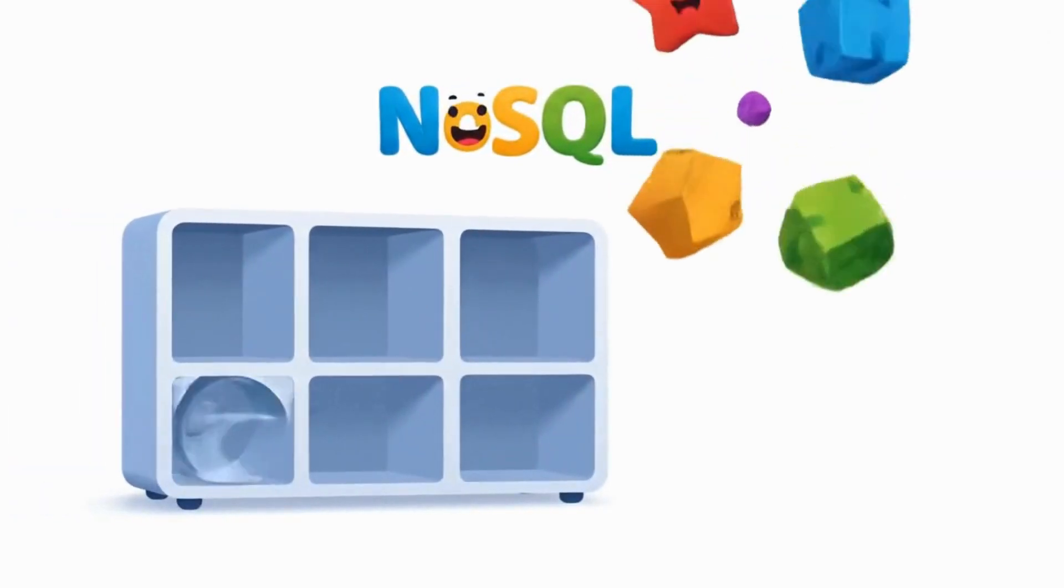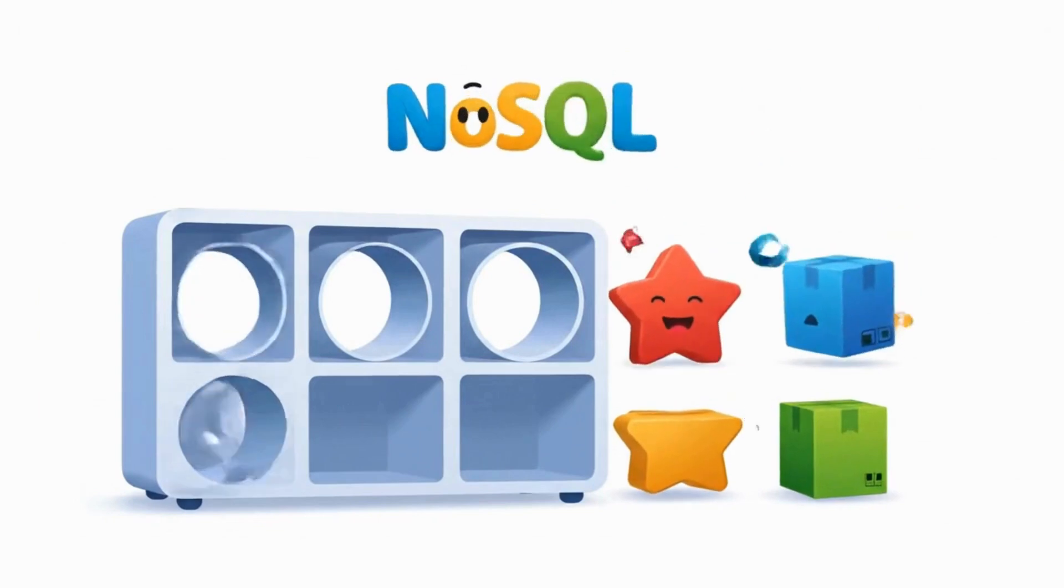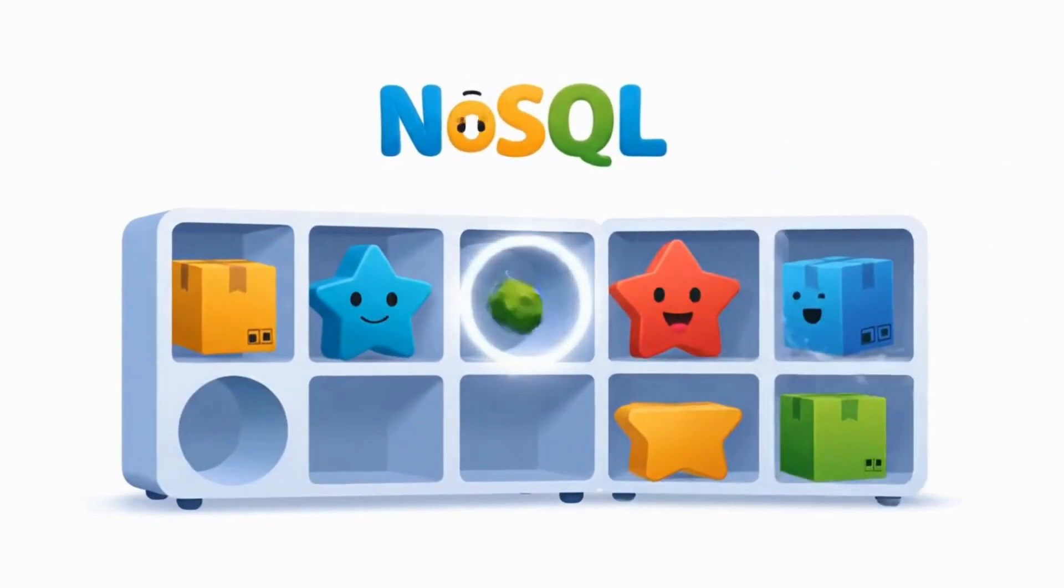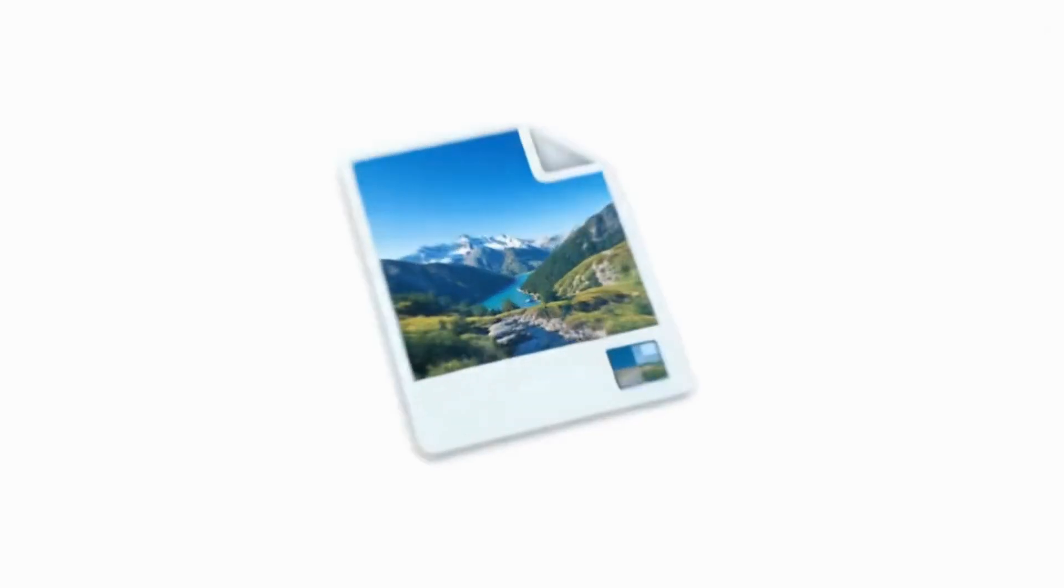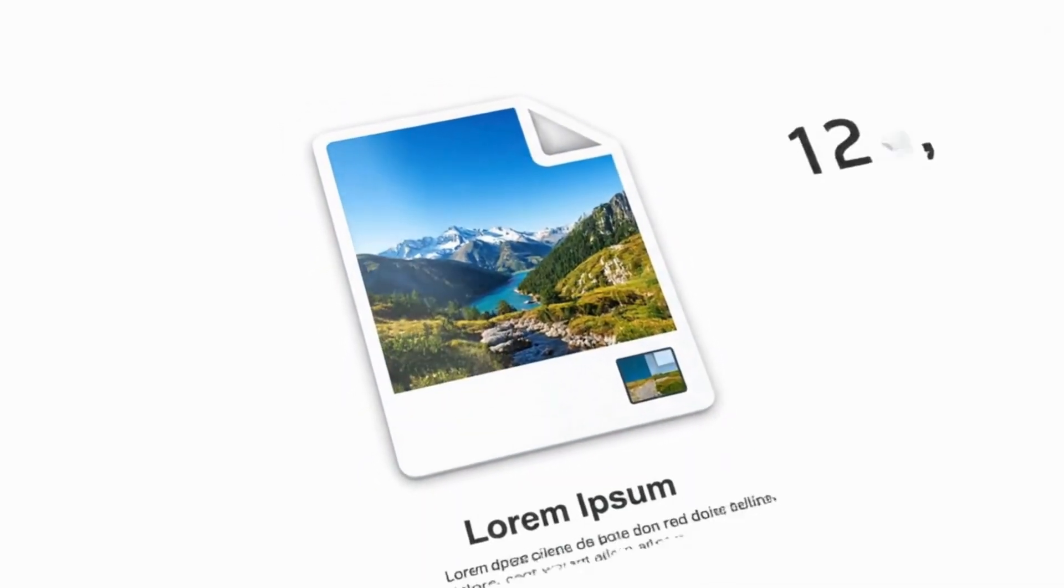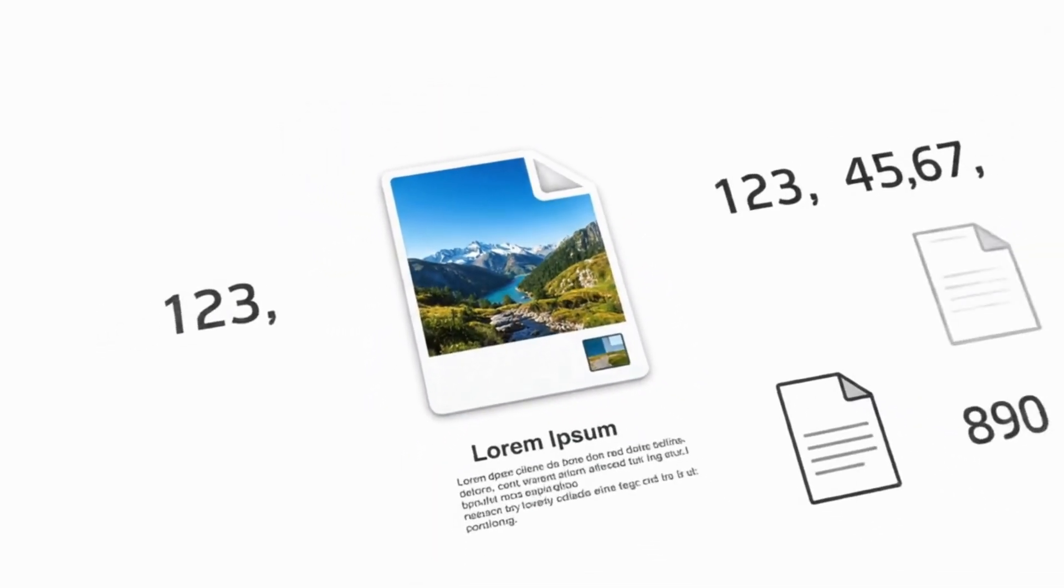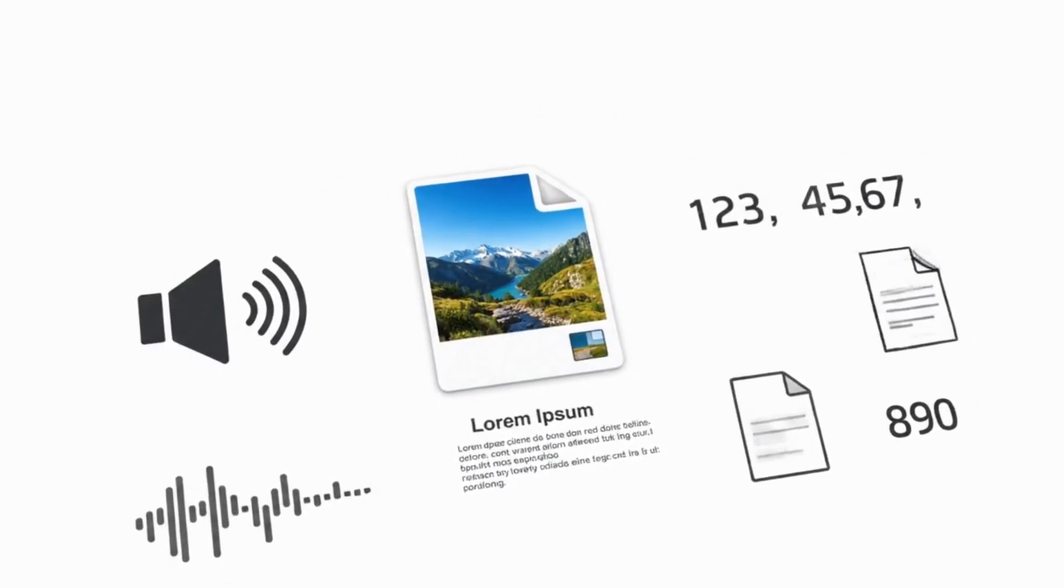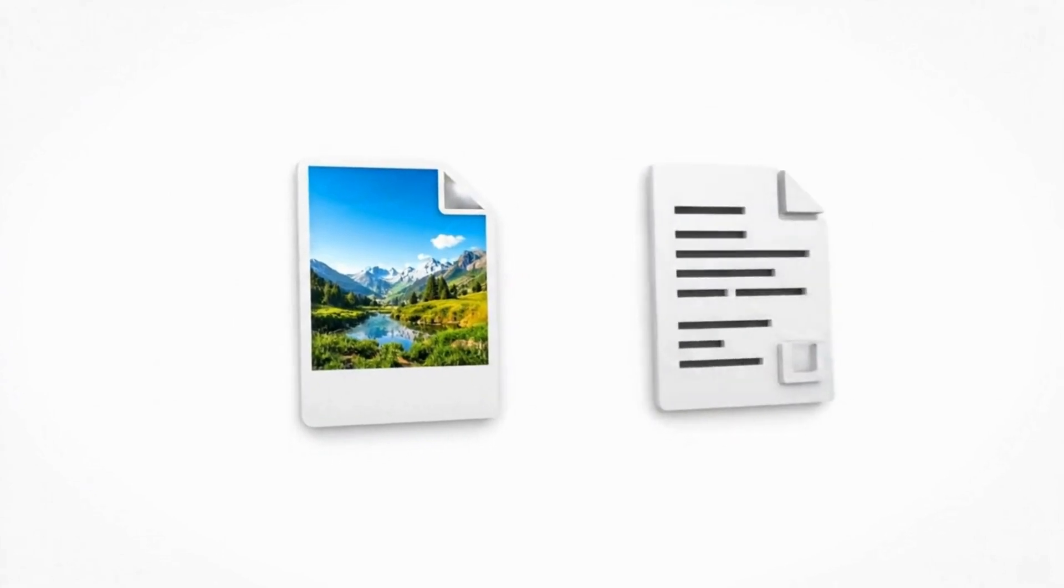They were created because sometimes the rigid structure of relational databases doesn't fit every situation. Think of NoSQL like a flexible storage unit, where you can put different shaped boxes without worrying about making everything fit into perfect rows and columns. They're great when you don't know exactly what your data will look like ahead of time, or when you need to store lots of different types of information.